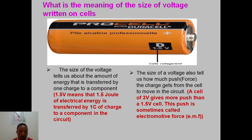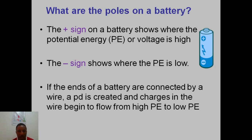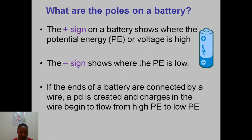What are the posts on a battery? The positive sign on the battery shows where the potential is high or the voltage is high, and the negative sign shows where the potential is low. Looking at it from a height point of view, something at a higher level is at high potential; something at a lower level is at low potential. From an energy point of view, something at a high potential has higher energy, something at a low potential has lower energy.